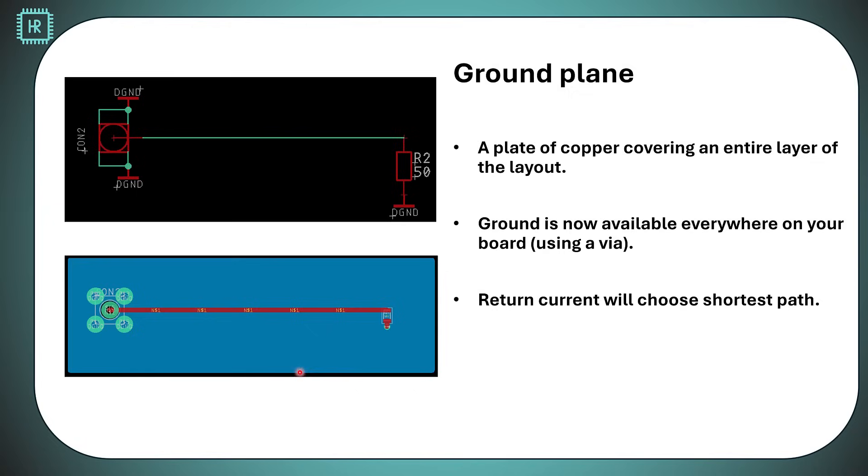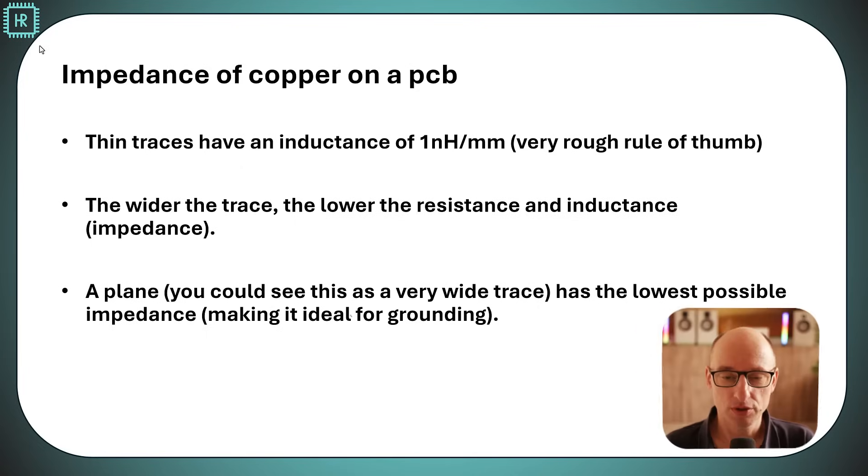The return current can choose where it goes. It can choose to go the long way, but that'll have a lot of inductance. So, it will choose the path right under the signal path because that has the lowest possible inductance. It has the lowest possible surface area of this loop. This effect, of course, increases with frequency because as the frequency gets higher, the inductance created by this loop will have a bigger and bigger impact.